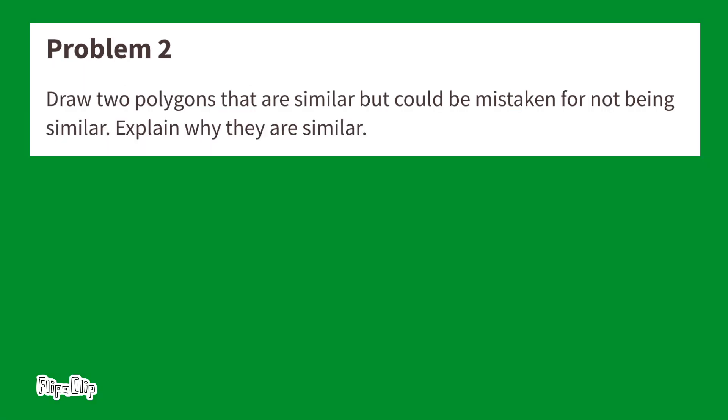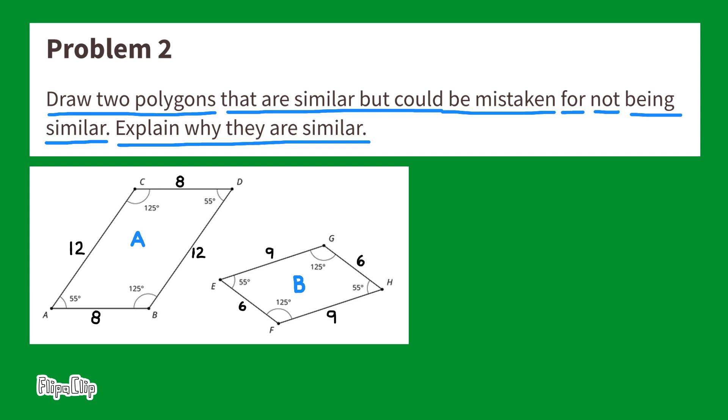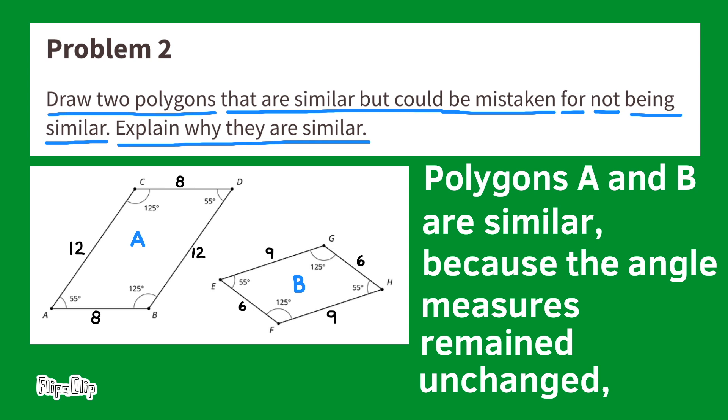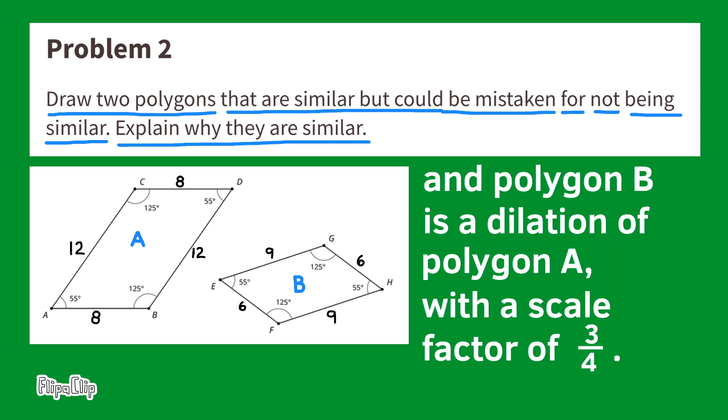Problem number two. Draw two polygons that are similar but could be mistaken for not being similar. Explain why they are similar. Here's an example of two polygons that are similar but could be mistaken for not being similar. Polygons A and B are similar because the angle measures remained unchanged, and polygon B is a dilation of polygon A with a scale factor of three-fourths.